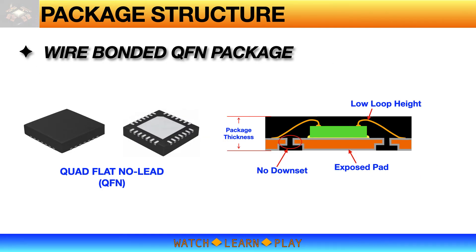Let's talk about quad flat no-lead package, commonly known as QFN. QFN also uses a copper lead frame; however, the leads are not protruding on the side of the package. Without the protruding leads, the QFN package is actually smaller than typical gull-wing packages, making it very popular for mobile devices or any electronic device that requires much smaller space. The QFN lead frame has no downset — that is, the leads and the die attach pad are at the same height. It is also a thinner package, typically around one millimeter thick, requiring a thinner die, thinner lead frame, and low loop height.